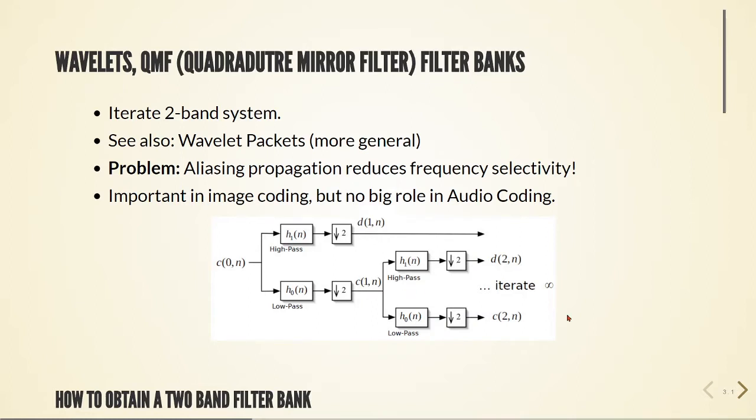So it's a two-band system, and we see that we have here some coefficients and then down-sampling and some coefficients for the high-pass session, one for the low-pass, and this down-sampling by two.